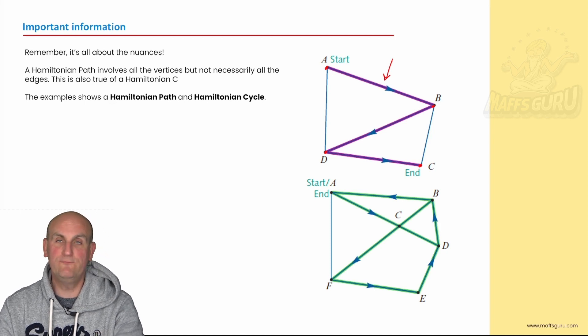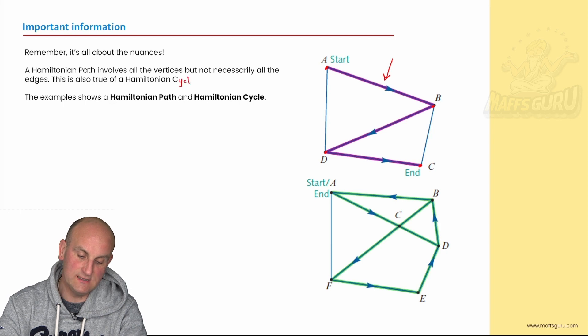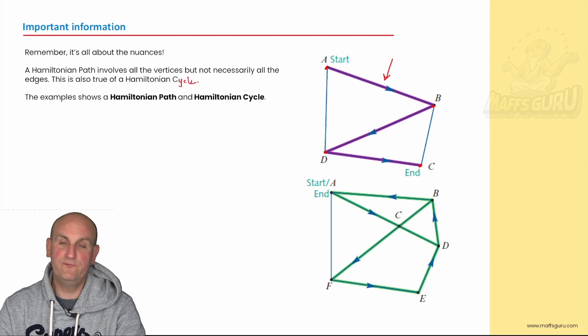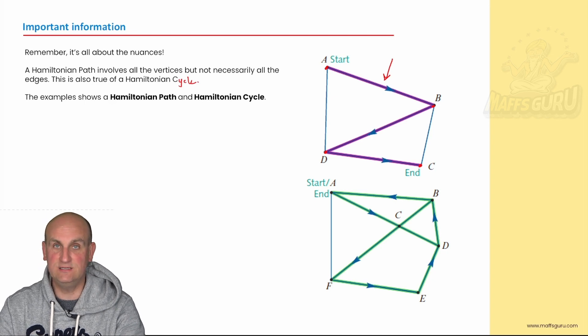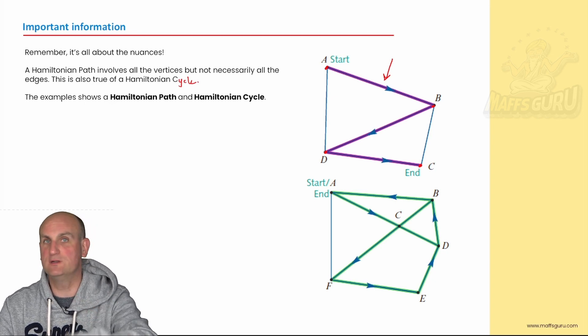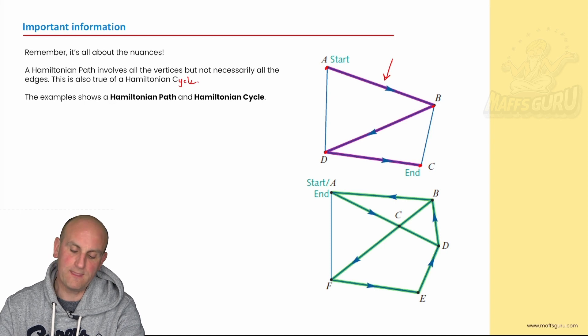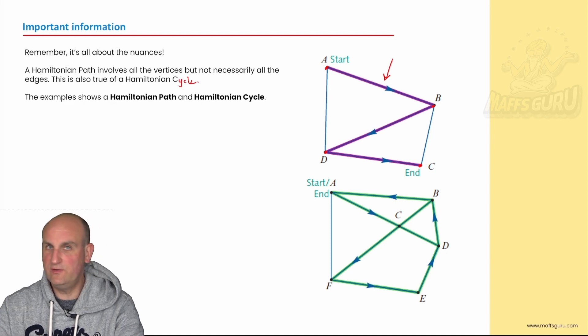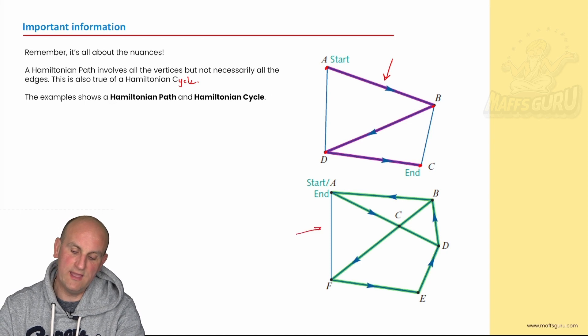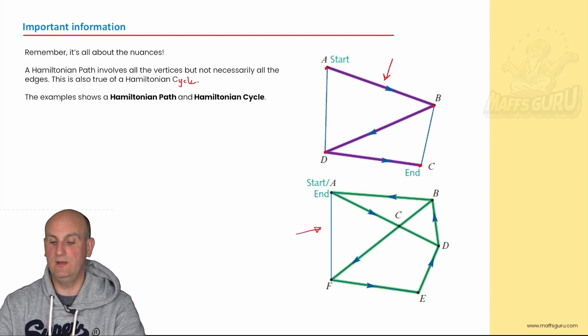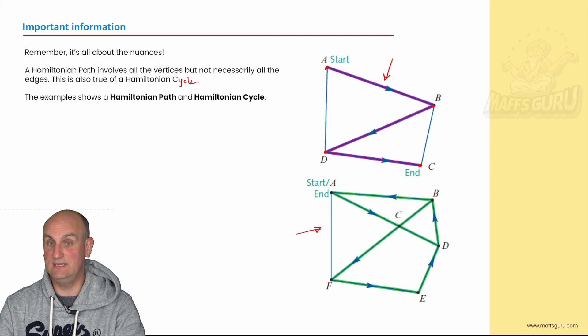What about the Hamiltonian cycle? Well again we've got to, and that should say cycle C Y C L E, we've got to visit all of the vertices. But again I don't have to do all of the edges. But with a cycle I've got to start and end at the same place. So I'd be interested if you pause the video in just a moment and see with this diagram where there is an error. In my view there is an error here. I think a part of this graph is coloured in that it doesn't need to be.